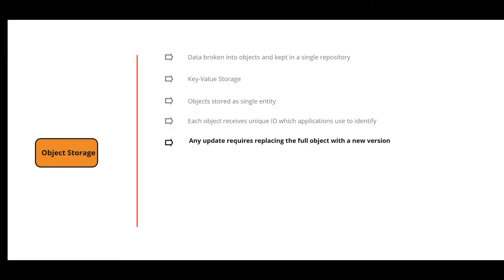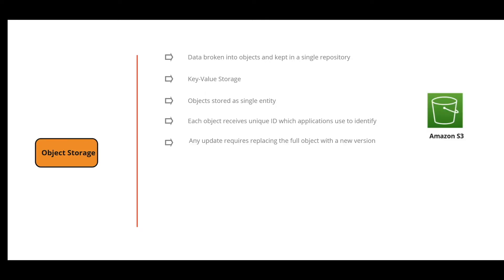Any update to an object requires replacing the full object with the new version — this relates to the concept of versioning in S3. Object storage is not suitable for hosting an operating system or running databases, but it can be used for storing backups or snapshot volumes of disks.